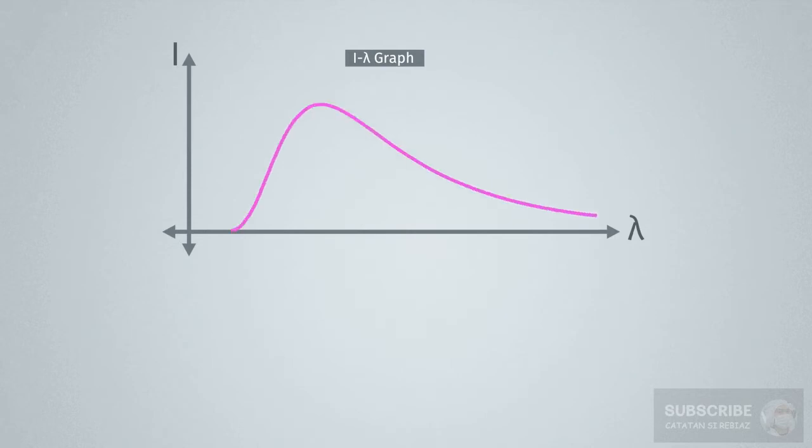A curve will form at a certain wavelength has a maximum intensity value. Call it lambda M. To the right and to the left of lambda M, the intensity decreases.